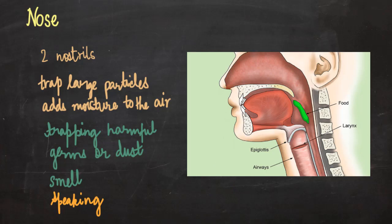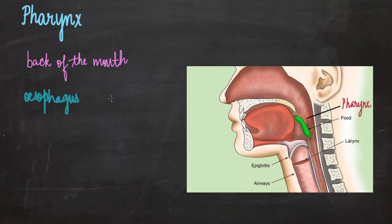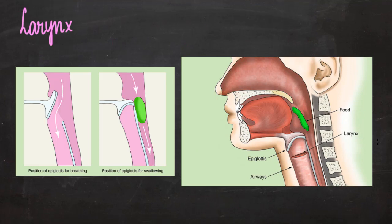Once air has entered the nose, it goes into the next part of the passage known as the pharynx. The pharynx is located at the back of the mouth and opens into two passages: one is the passage for food, known as the esophagus or food pipe, and the other is the passage for air, called the trachea or windpipe.